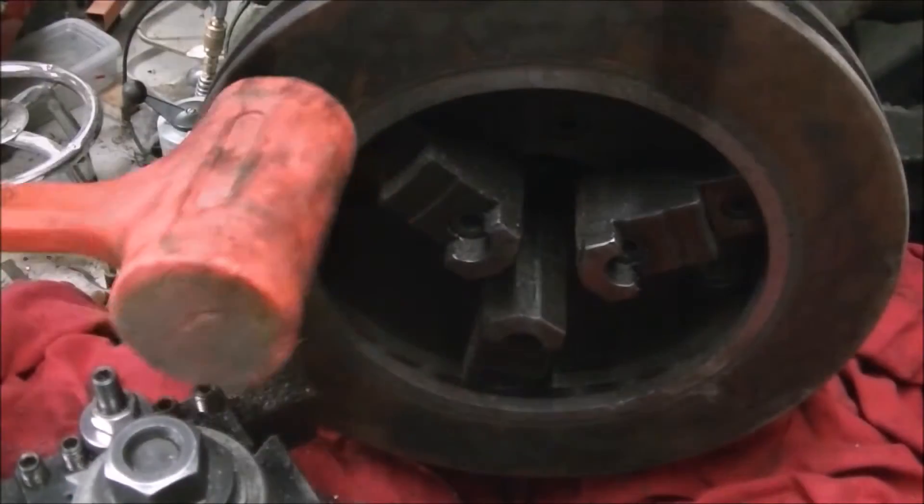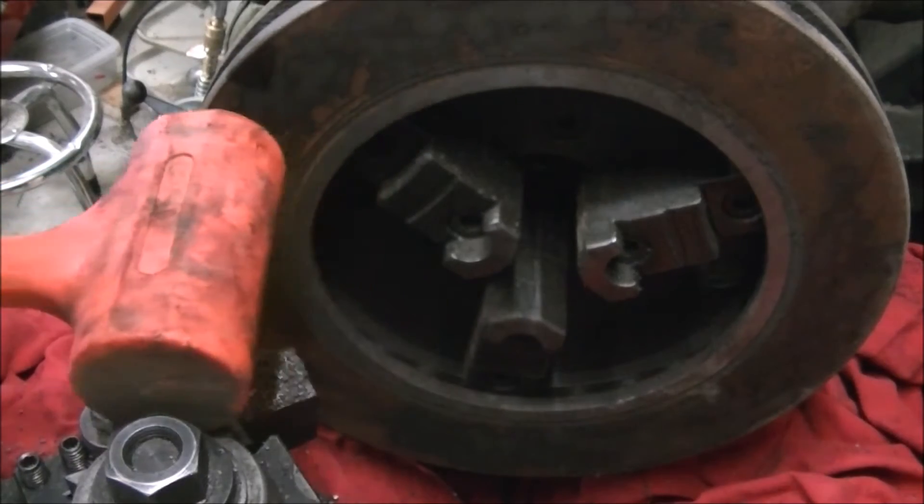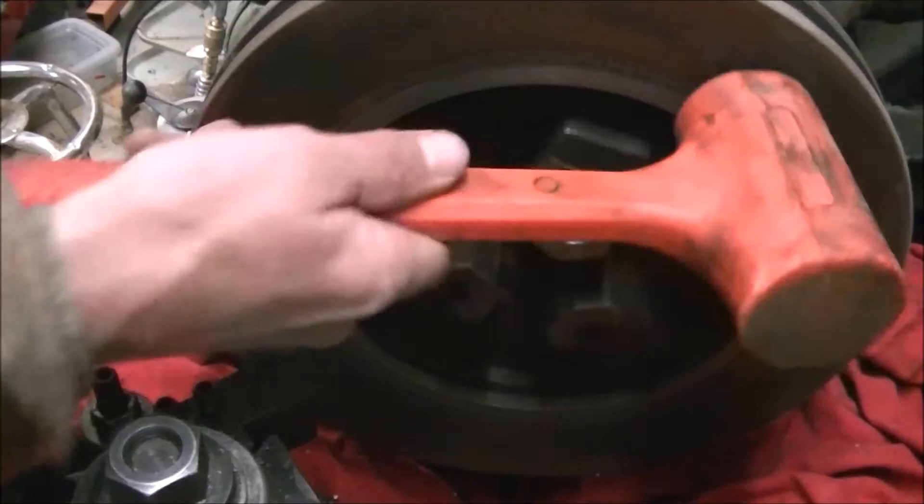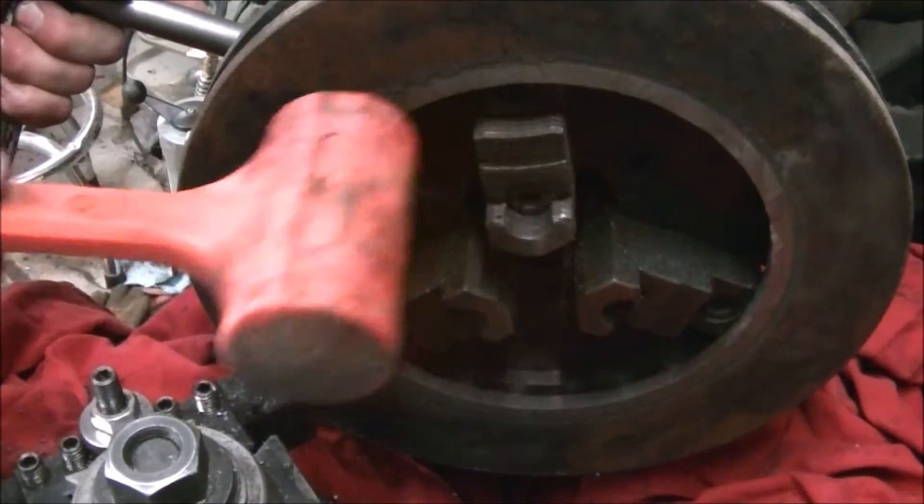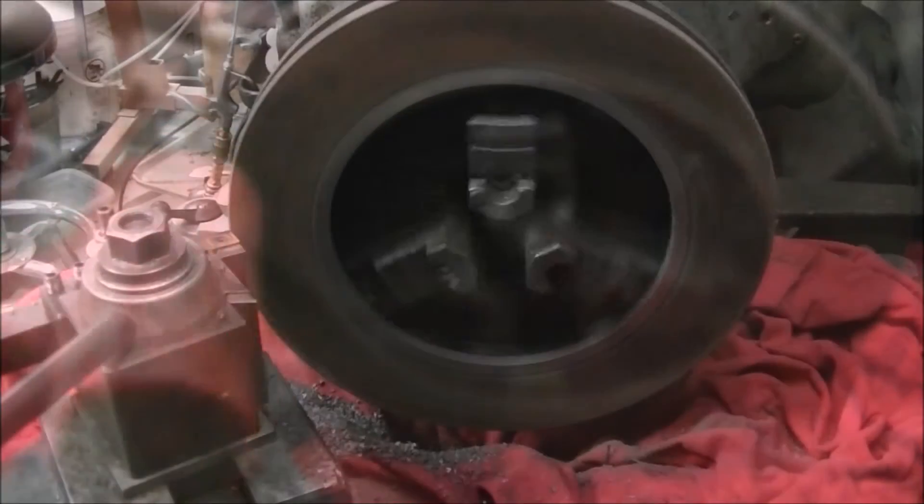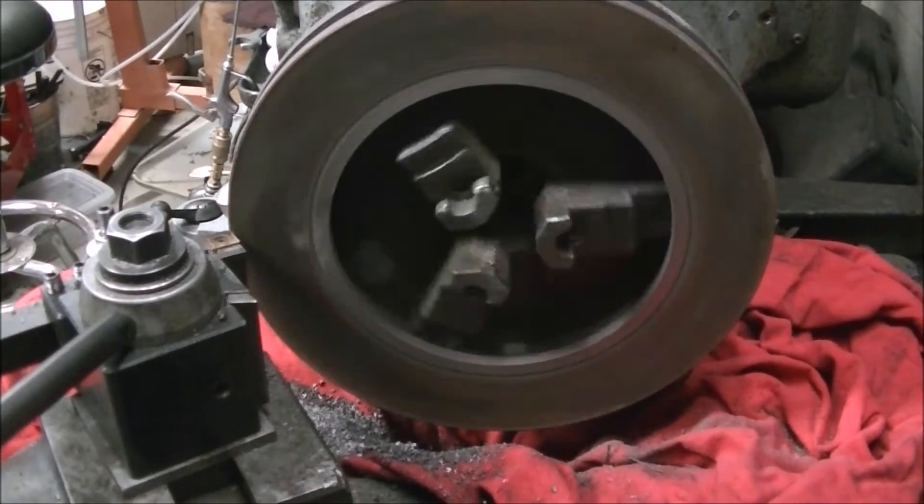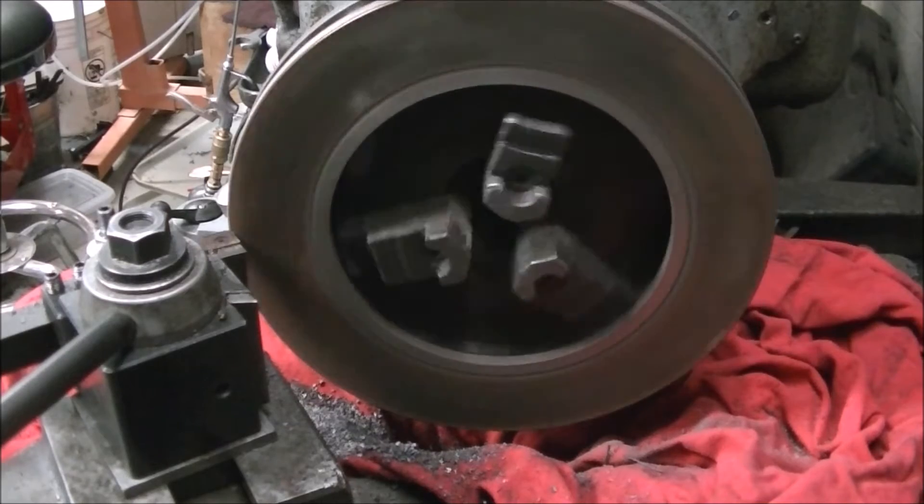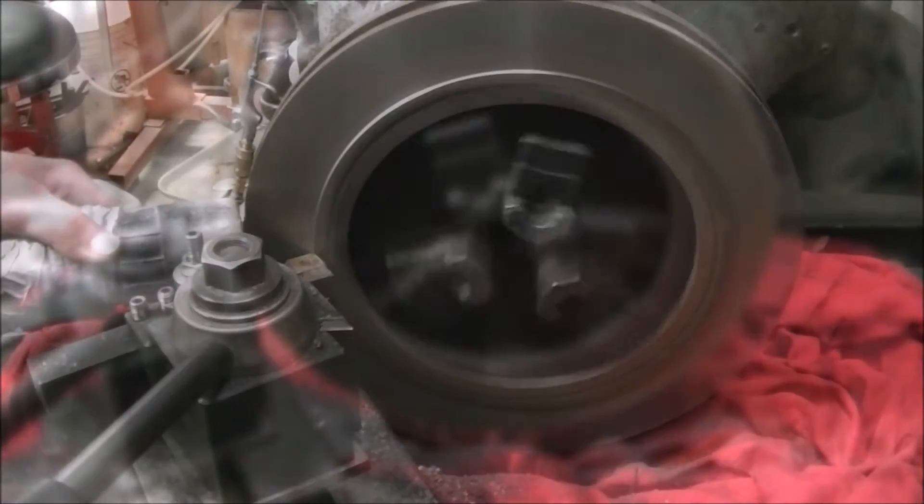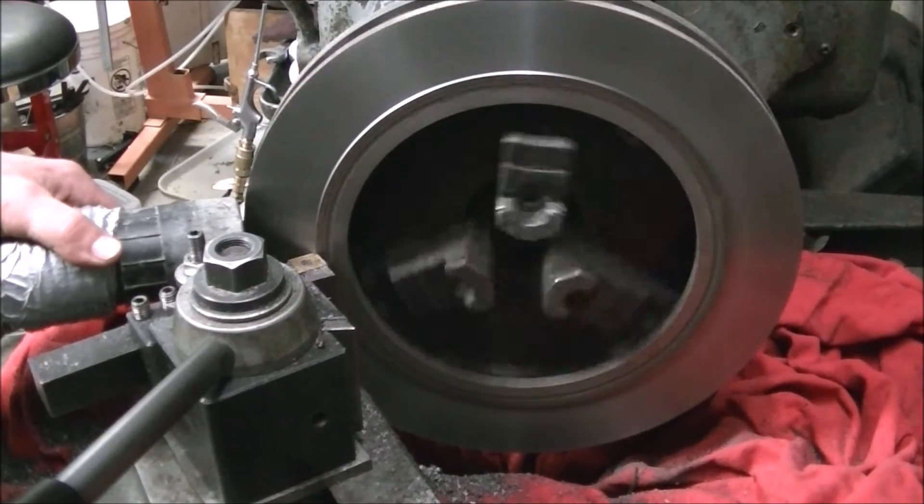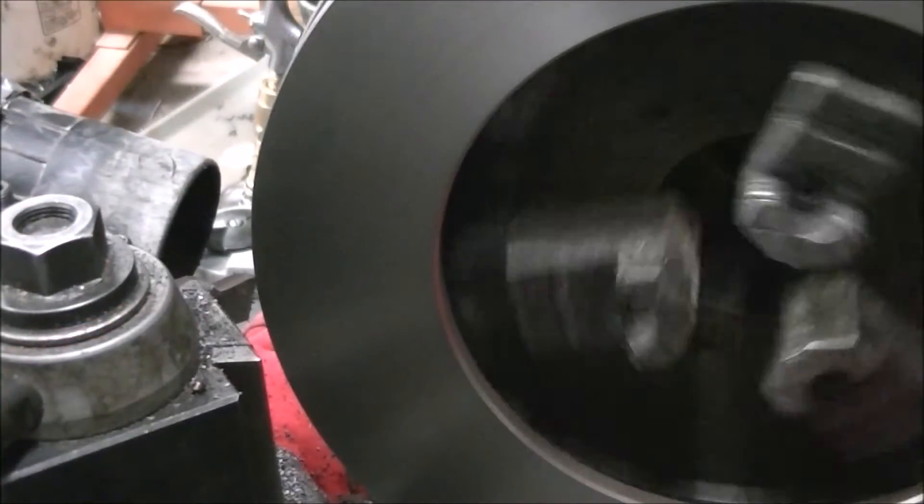The reason I had a spare rotor was because it warped that one and replaced it. So I mounted that up on the lathe and started working on chewing off some of that cast iron. The goal was to get the two faces parallel to each other and as flat as I could get them with the lathe I've got.